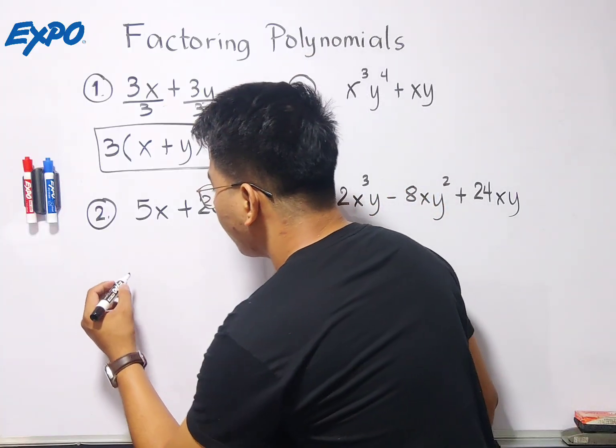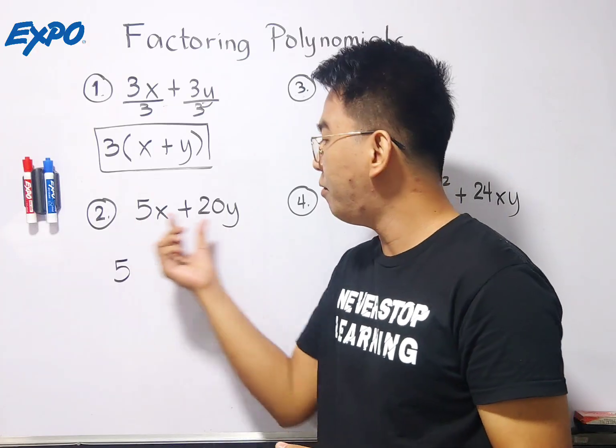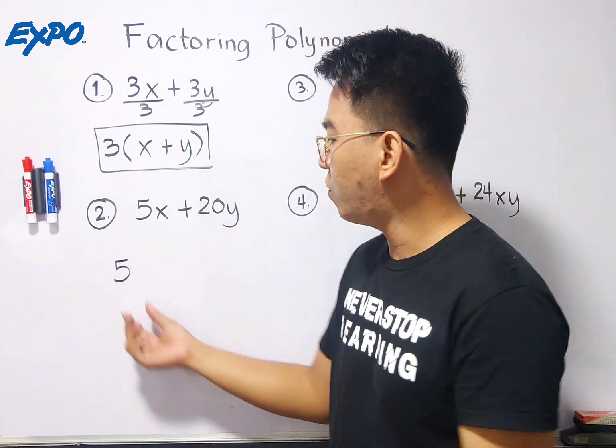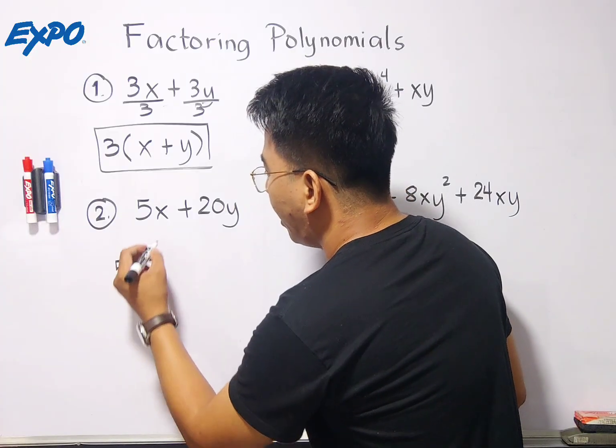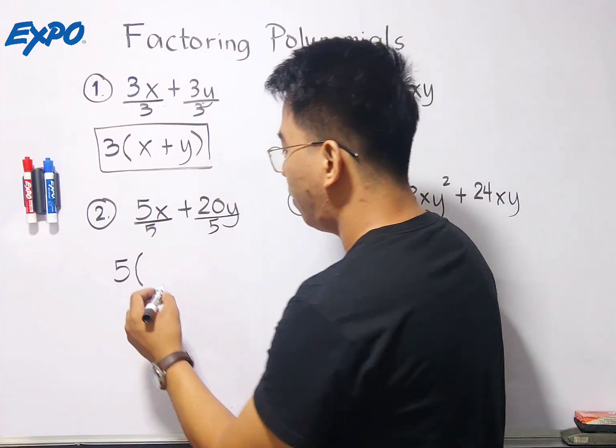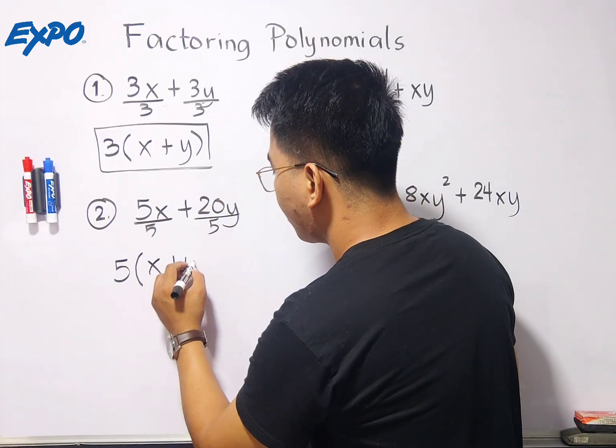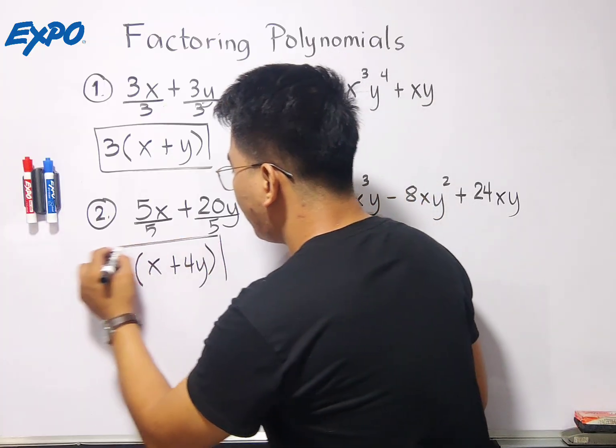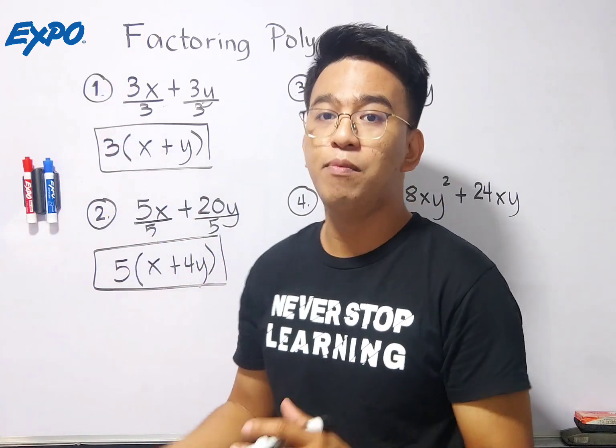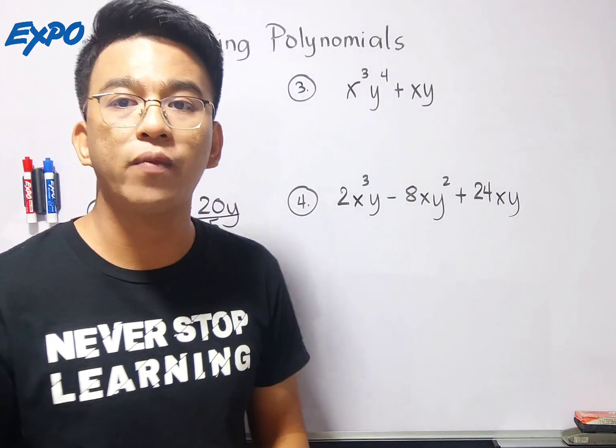if you will observe the given numbers for the coefficient 5 and 20, definitely their greatest common factor is 5. As for the variable in each term, look carefully if there are any common variables in each term. Since this is x and y, there's nothing common between them. Meaning, this is our GCF. So we will try to use a parenthesis and divide each term by your GCF, 5. So we have 5x divided by 5, which is simply equal to x. Then 20 divided by 5 is plus 4. And then we have the variable y. Meaning guys, this is now the factored form of item number 2.